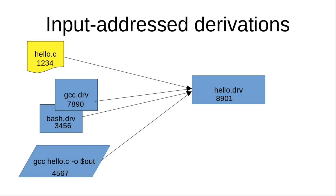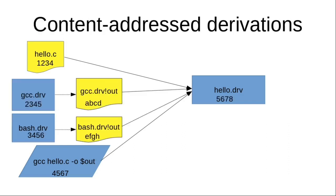Content addressed derivations take a different path. The idea is that rather than having hello.drv directly depending on the gcc or bash derivations, it depends on the output paths.